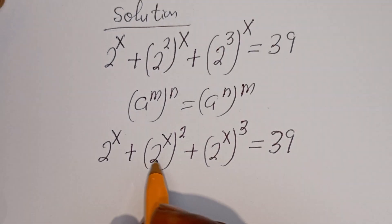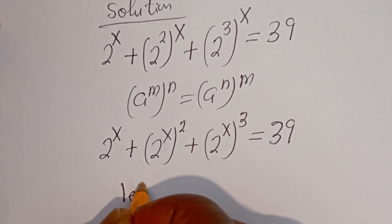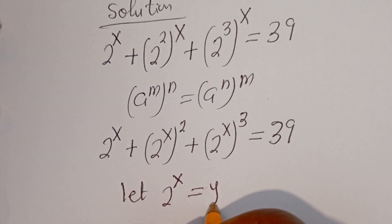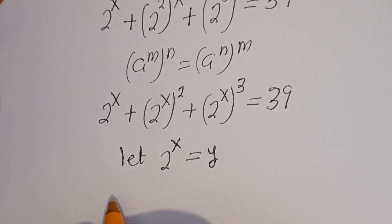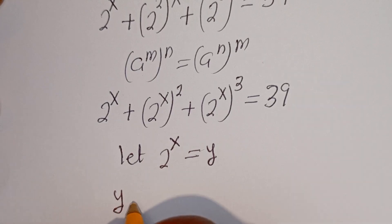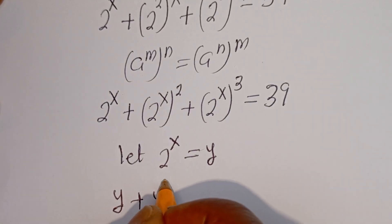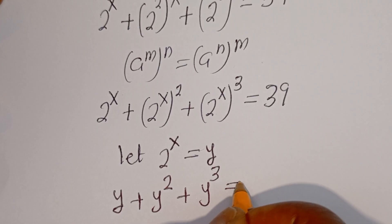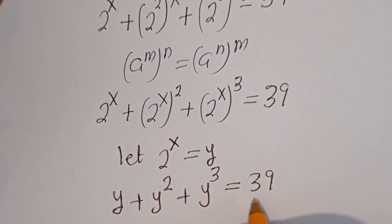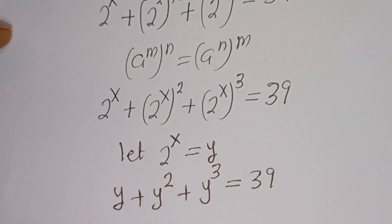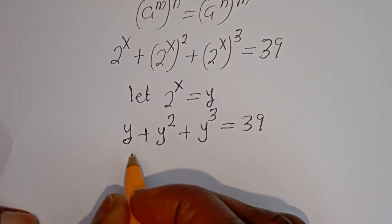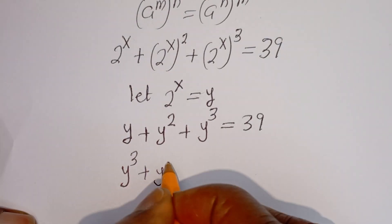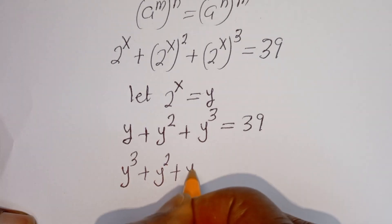You can see that 2 to the power of S is common. Let 2 to the power of S equal Y. Then we have Y plus Y squared plus Y cubed is equal to 39.